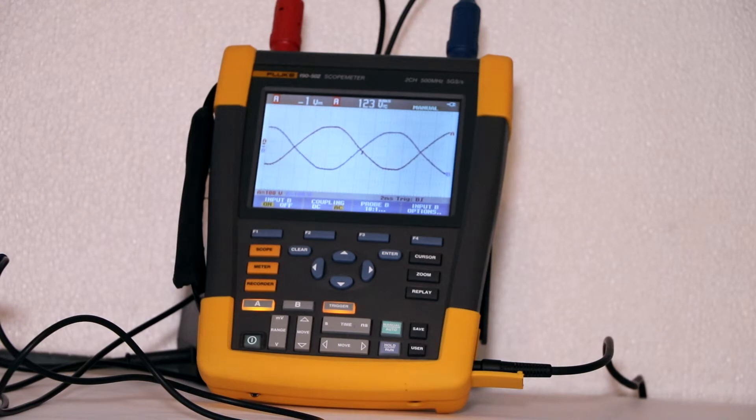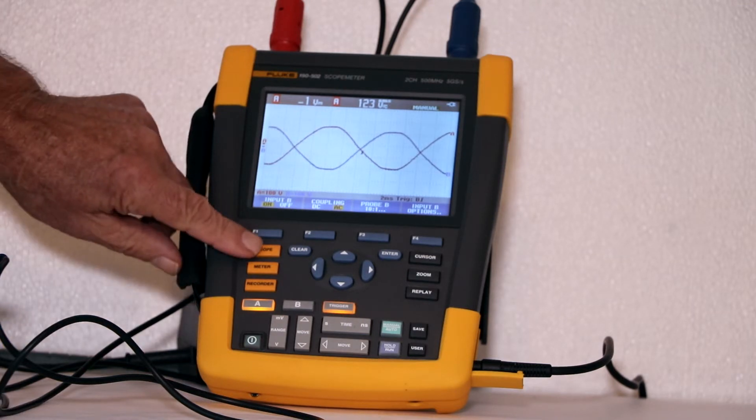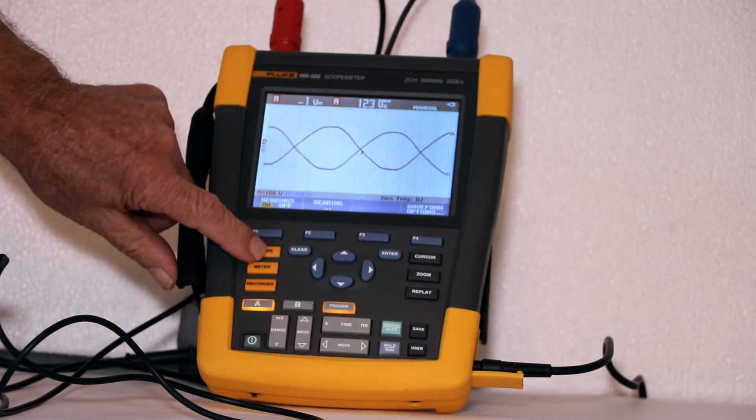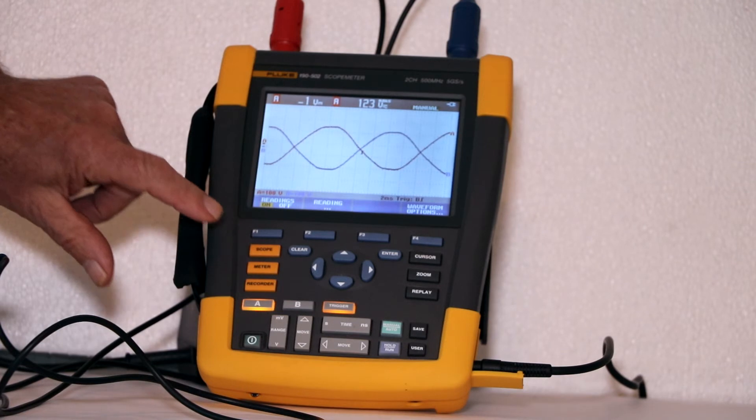These two out of phase voltages cannot be directly combined but on the screen of the oscilloscope they can be added using the math facility. To do this first press scope to normalize the toolbar at the bottom of the display.